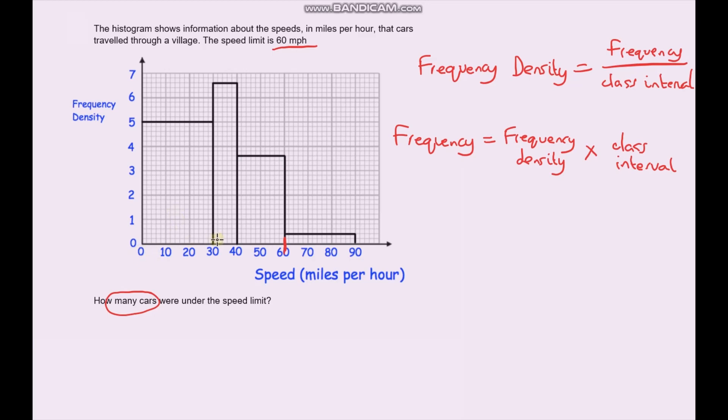Here, our base is 30 and our height is 5. So 30 times 5 is 150. There are 150 cars traveling between 0 and 30 miles per hour. Here, we've got 10 as our base and our height is 6.6. So 6.6 times 10 is 66. The base here is 20 and the height is 3.6. So 3.6 times 20, that gives us 72.